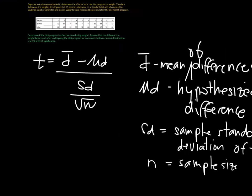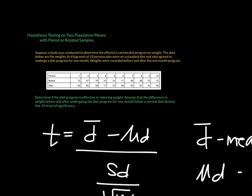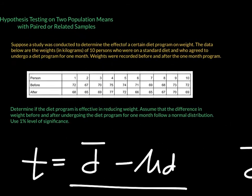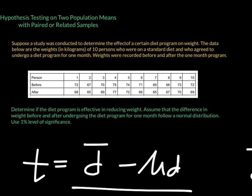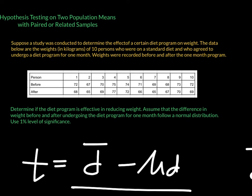We use t instead of z when the population standard deviation is unknown — we have no information about the population standard deviation or variance. Also, the sample size is just 10. Because this is a paired samples test, we count the sample size in pairs: pair one, pair two, up to pair ten, giving us n equals 10.